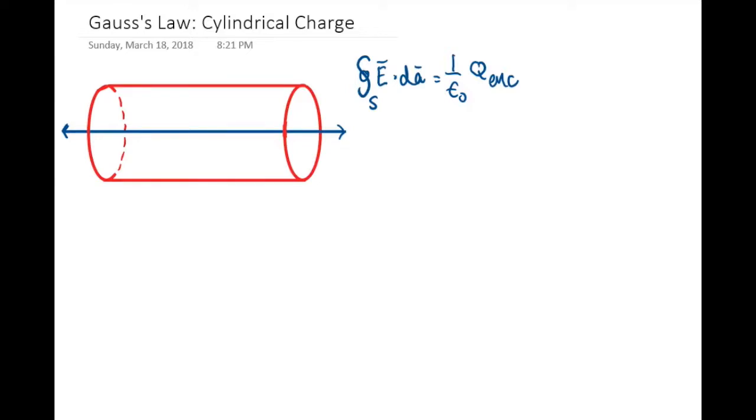In this video, I'll be doing example 2.4 from Griffith's chapter 2, which uses Gauss's law to find the electric field inside a cylinder of charge.